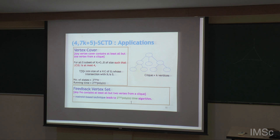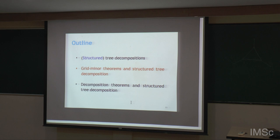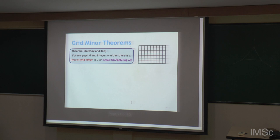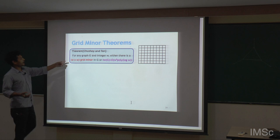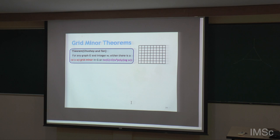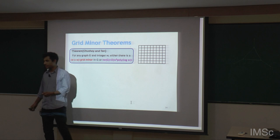Now I will move to grid minor theorems and how we can use structured tree decomposition in the grid minor theorem setting. For every graph, either its tree width is large or there is a large grid as a minor. For a general graph G and integer W, either it has a W×W grid as a minor, or its tree width is O(W^9).